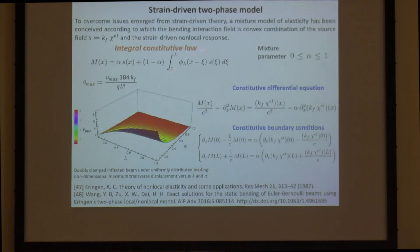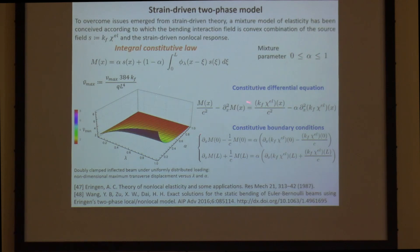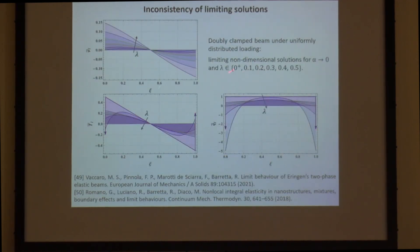Many researchers in the literature consider the strain-driven two-phase model, which is a convex combination between a local phase and a non-local phase based on Eringen's theory. While this leads to a well-posed structural problem, it exhibits a singular behavior when the mixing parameter tends to zero. It is interesting to note that if one solves a simple beam using the strain-driven two-phase model, the limiting solution cannot be attached to the structural problem formulated according to Eringen's solution.